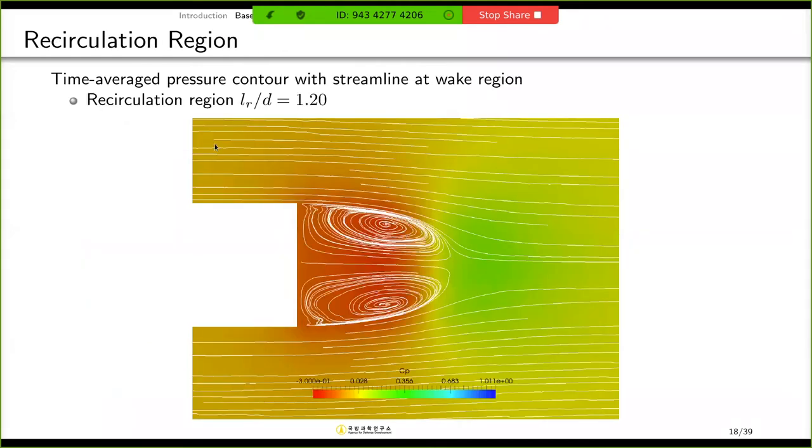And I also compared the recirculation region. This is the time-averaged pressure contour with streamline at wake region. And when I measure the size of recirculation, it is about 1.2 times diameter, which is quite similar to Mariotti's experiment. During this simulation, I confirmed that PyFR can successfully resolve the detailed vortical structure in base flow and predict the base drag more accurately.